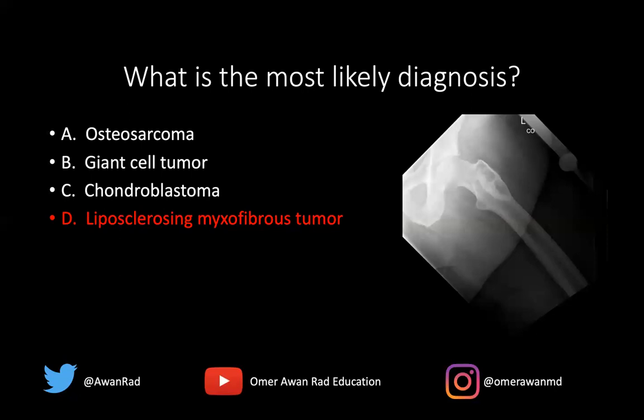A giant cell tumor would typically involve the metaphysis and may extend to the epiphysis of a long bone. You certainly wouldn't expect sclerotic margins within a giant cell tumor. A chondroblastoma is typically seen in the pediatric population, sometimes with chondroid rings and arcs matrix mineralization, and can be in the metaphysis extending to or strictly within the epiphysis. This lesion doesn't have the same appearance as a chondroblastoma.